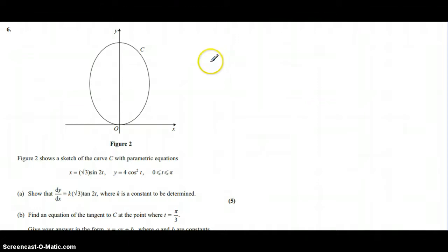Hi there, this is question 6 from Core 4 June 2012, the Edexcel specification. This particular question is parametric equations and we're going to have a look through how we go about it. The first thing is that you're going to need to find dy by dx for question 1, and we're given two parametric equations x and y in terms of t for this particular curve.